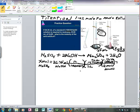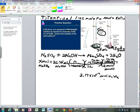What that's telling us is that we have 2.17 times 10 to the minus 3 moles of H2SO4 in the Erlenmeyer flask.